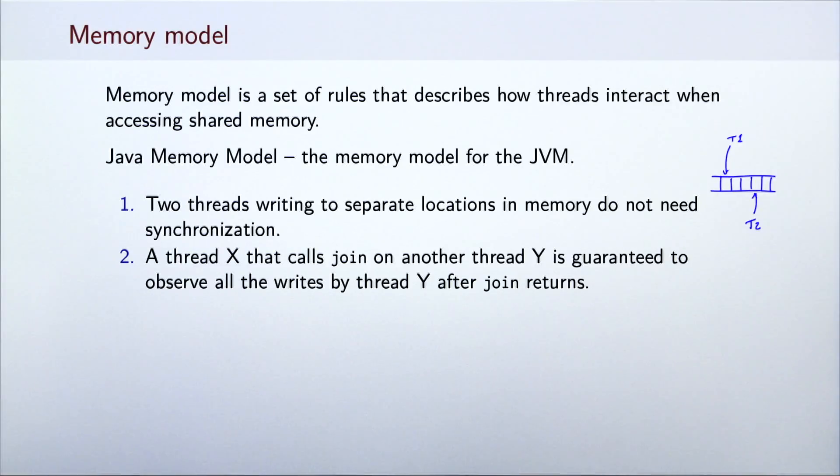The second rule is, a thread X that calls join on another thread Y is guaranteed to observe all the writes by thread Y after join returns.